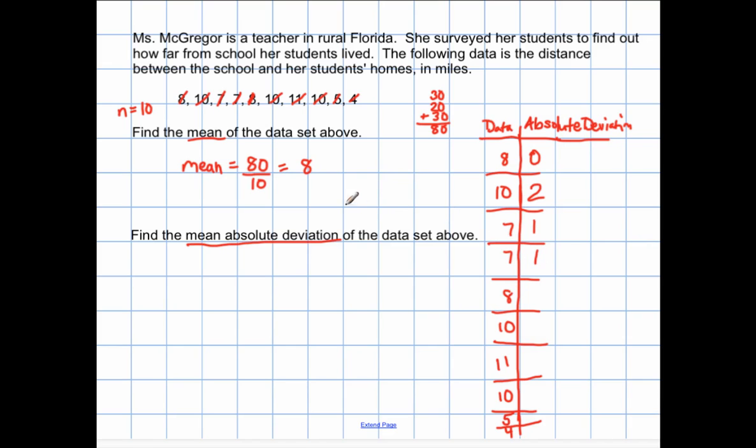How far is eight from eight? Zero away. How far is ten from eight? Two whole numbers away. How far is eleven from eight? Three whole numbers away. How far is ten from eight? Two whole numbers away. How far is 5 from 8? 3 whole numbers away. And how far is 4 from 8? 4 whole numbers away. So I have now found the absolute deviation of each of the data points from the mean.